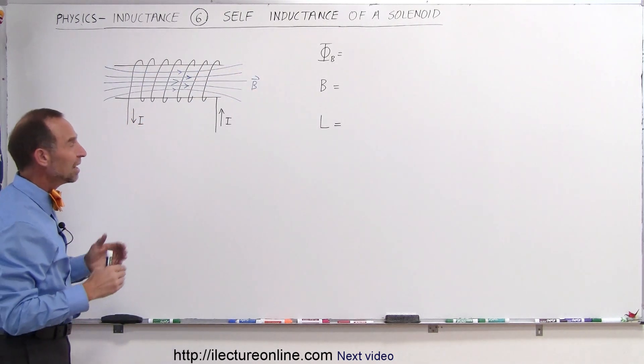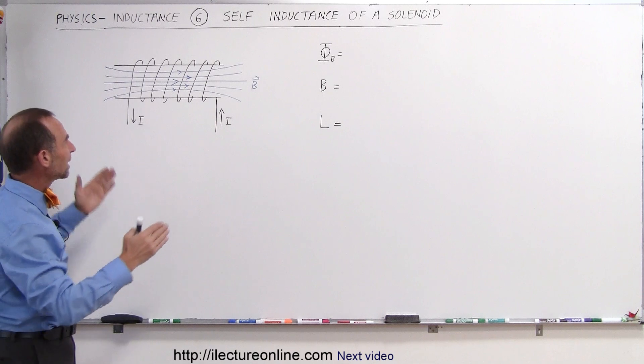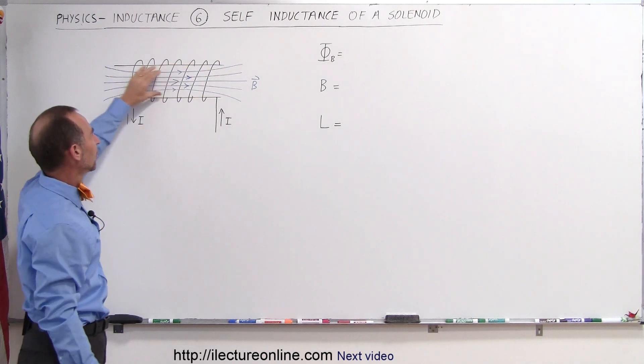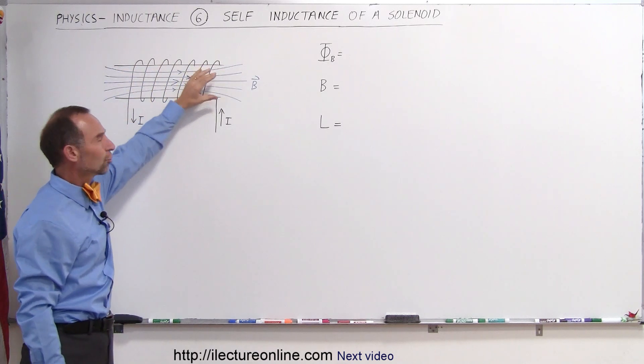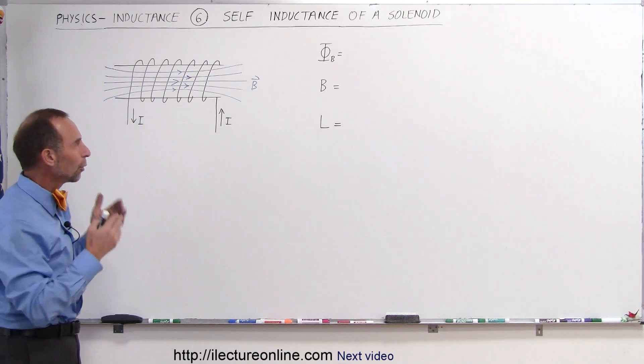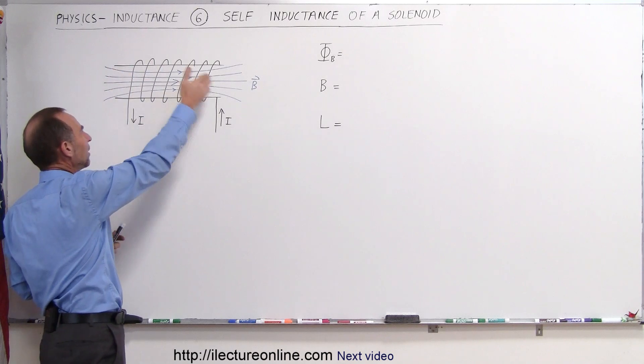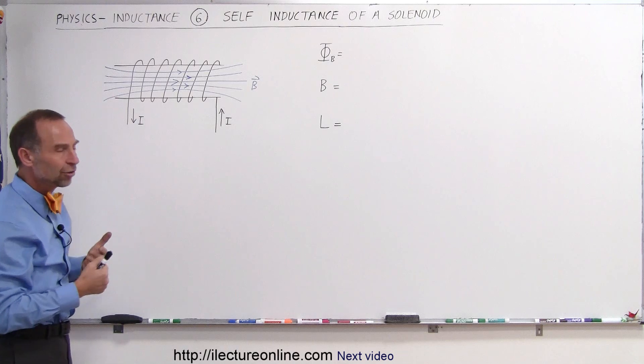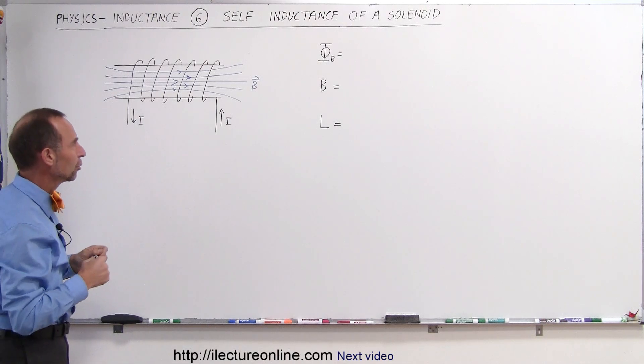If the solenoid is long compared to its diameter, you can pretty well assume that the magnetic field or that the flux through the tube is pretty well uniform all the way through. It does have some edge effects, but if it's a long skinny tube, which typically we have for coils, you can almost imagine a uniform magnetic field throughout the tube.